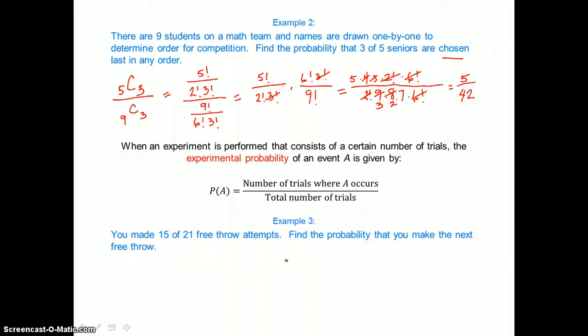In example 3, you made 15 of 21 free throw attempts. Find the probability that you make the next free throw. Well, the number of trials where A occurred was 15 and the total number of trials attempted is 21. So your probability for making the next free throw is 15/21, or we'll have to simplify and get rid of a factor of 3 top and bottom. So your probability that you make the next free throw is 5/7.